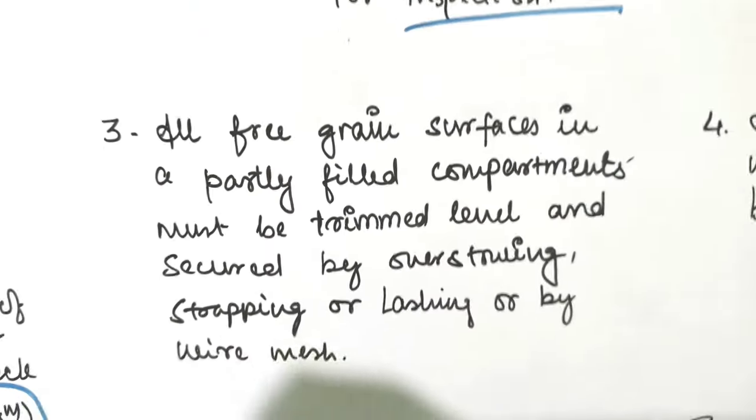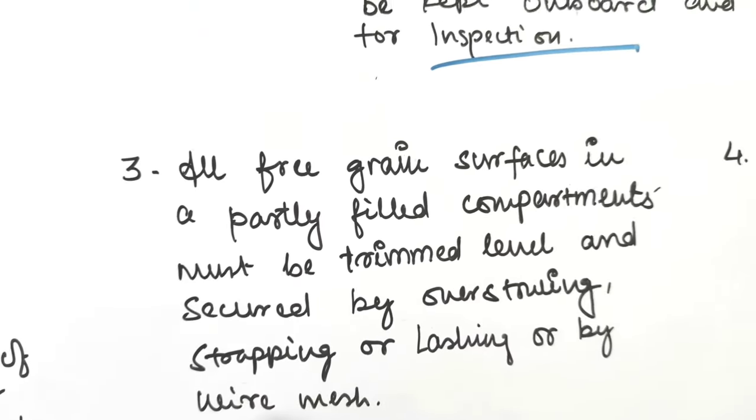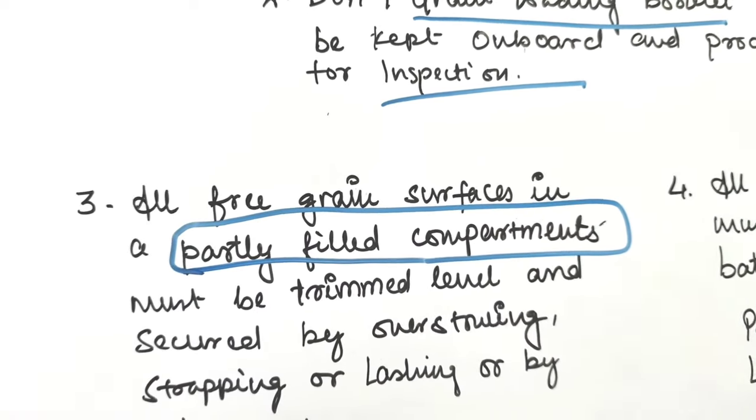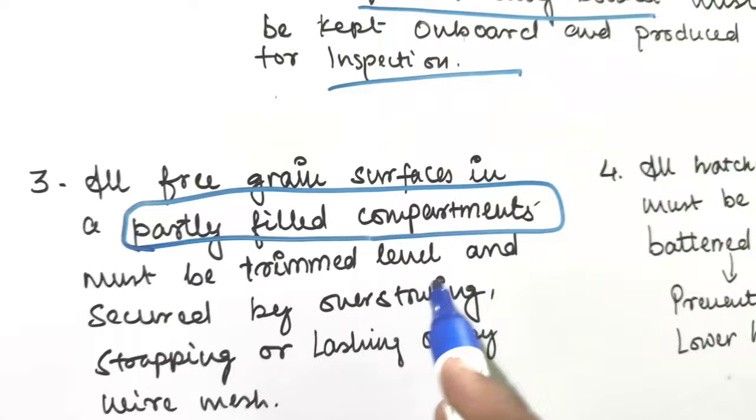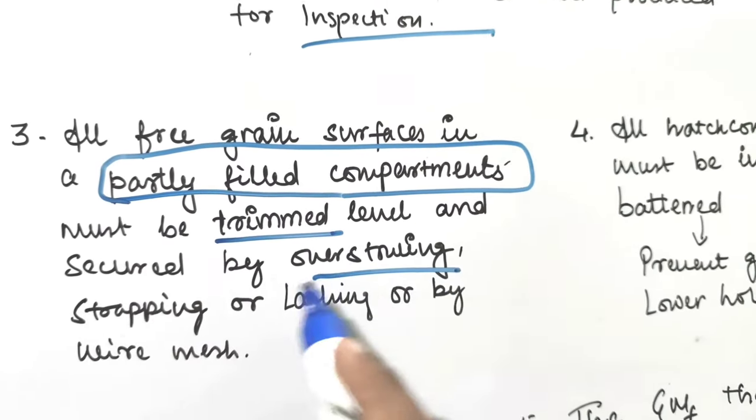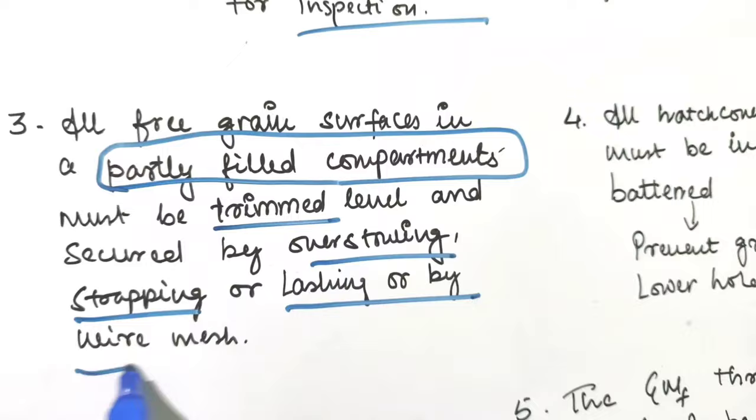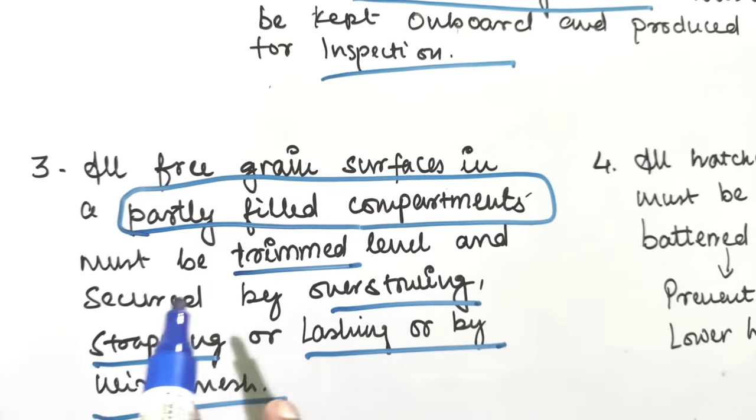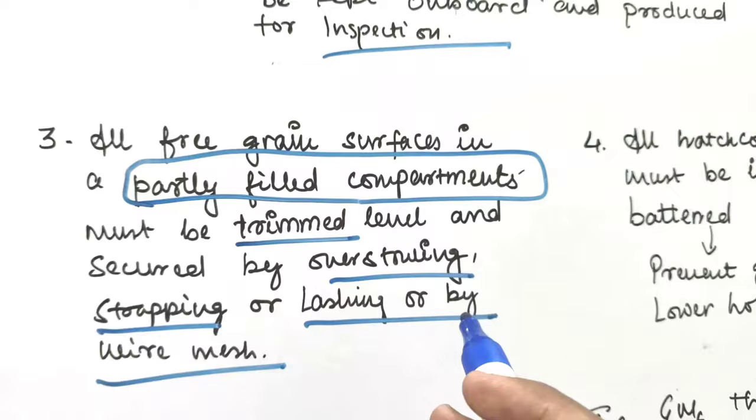Third, all free grain surfaces in partly filled compartments must be trimmed level and secured by overstowing, strapping, or lashing, or by wire mesh. For partly filled compartments it must be trimmed level and secured by overstowing, strapping, or lashing, or by wire mesh.